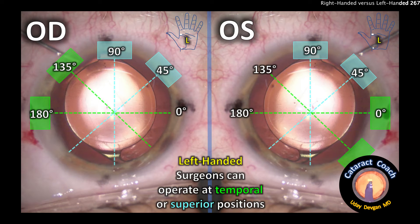We're discussing this because a useful technique is to place the incision on the steep axis, which can give between a quarter to half diopter — sometimes more — of flattening. Or we can do paired incisions that can give 0.75 to even one diopter of corneal flattening at the steep meridian. So we definitely want to be able to change the position of our phaco incision and sit either temporally or superiorly to suit our right or left hand, depending on the surgeon.